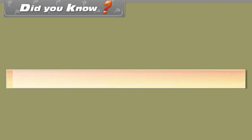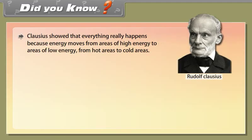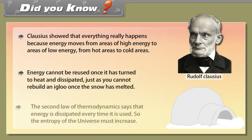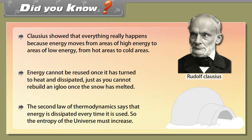Did you know? Clausius showed that everything happens because energy moves from areas of high energy to areas of low energy — from hot areas to cold areas. Energy cannot be reused once it has turned to heat and dissipated, just as you cannot rebuild an igloo once the snow has melted. The second law of thermodynamics says that energy is dissipated every time it is used, so the entropy of the universe must increase.